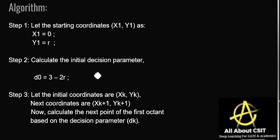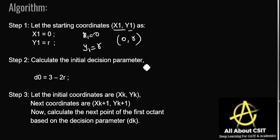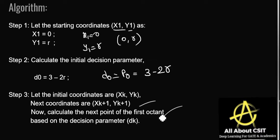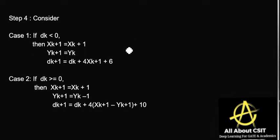Now let's look at the algorithm. Let the starting coordinates be x1 and y1. The circle is generated with the help of the center and radius, so let x1=0 and y1=radius — these are the starting points. Calculate the initial decision parameter d0 = 3 − 2r. Let the initial coordinates be (xk, yk) and the next coordinates be (xk+1, yk+1). Now calculate the next point of the first octant based on the decision parameter. If dk < 0 (negative value), then xk+1 = xk + 1.